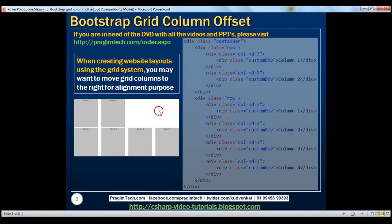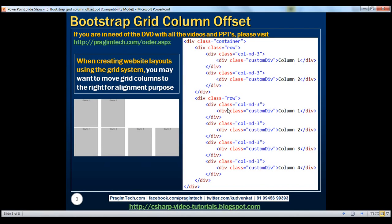We can very easily achieve this using this HTML. Notice within the container, we've got two rows. Within the first row, we've got two columns, each spanning three columns within the 12-column Bootstrap grid system. Within our second row, we've got four columns, each column also spanning three columns within the 12-column Bootstrap grid system.